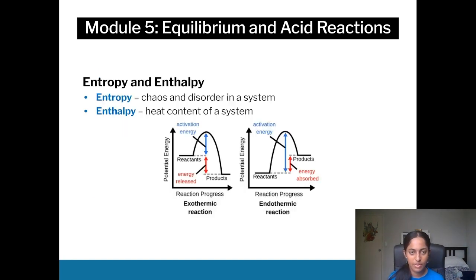In terms of entropy and enthalpy, entropy is pretty much the chaos or the disorder in a system, and enthalpy is the heat content of the system. You can relate enthalpy and entropy in terms of Gibbs free energy as well, which I'll get to later on.